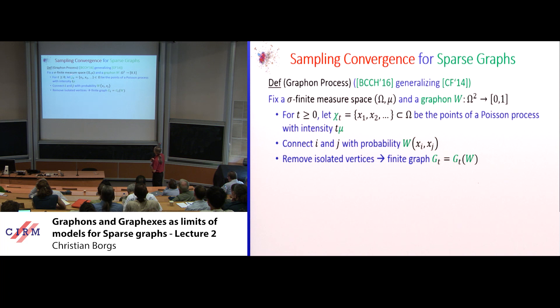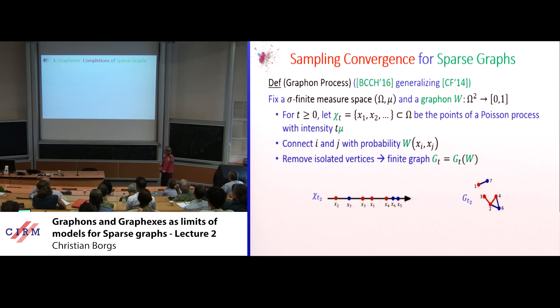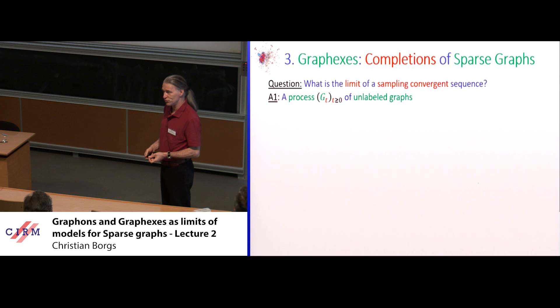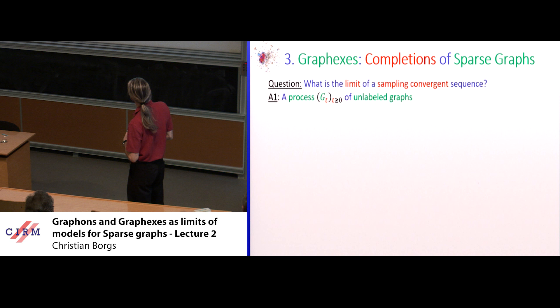But is this all? The answer is no. Let me proceed more systematically. This process is a process of unlabeled finite graphs. We can represent it as an extremal exchangeable random measure. We have the positive quadrant, measures on it with a sigma-algebra, and therefore can define a random measure.